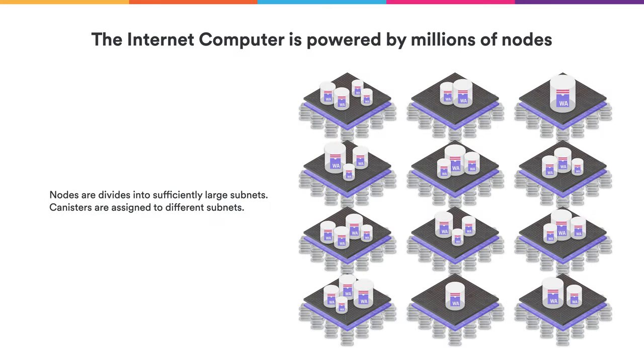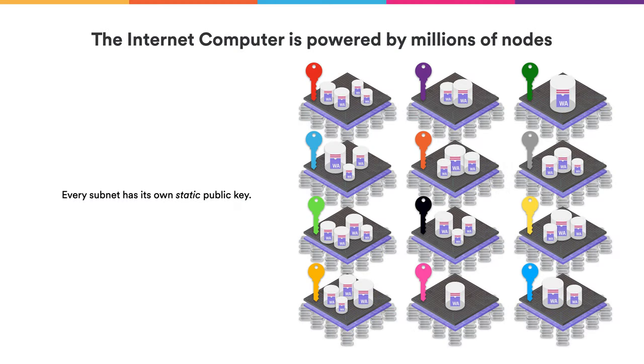In order for subnets to talk to each other — to authenticate their messages and also to authenticate messages towards the user — each subnet has its own public key. All the nodes of a subnet have a key share of those public keys. When a user receives a message authenticated with a subnet key, it is signed with that subnet's key. And when a canister calls out to another canister and receives a response, that message is also signed with respect to the subnet key.